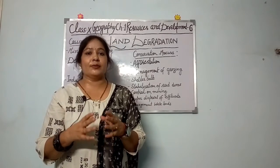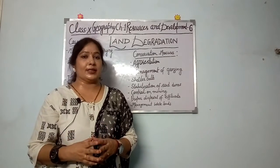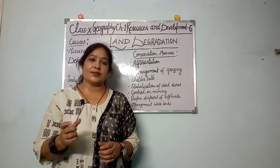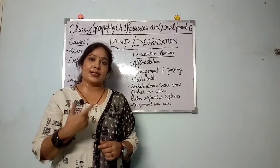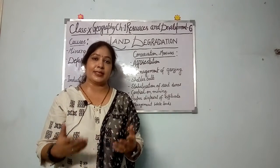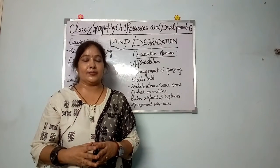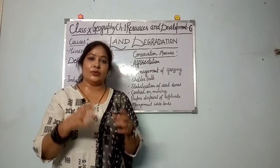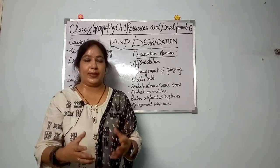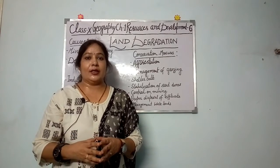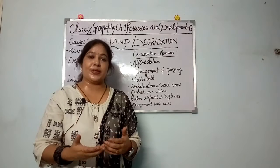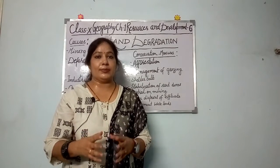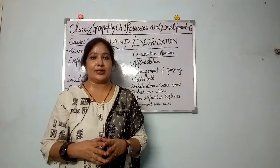In sab se hume bachna hoga aur conservation measures adopt karne honge. Conservation ke liye hum afforestation kar sakte hain — deforestation ka opposite — jahaan zyada se zyada plants implant karein, plantation zyada hogi toh land degradation se bach paayega. Shelter belts laga sakte hain, deserted areas mein sand dunes hain unko stabilize kar sakte hain by planting cacti or thorny bushes. Industrial waste ko proper treatment karke, harmful chemicals ko separate karke tab water discharge karein — waste management karke land ko degrade hone se bacha sakte hain.